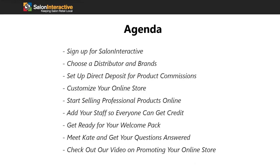Just to quickly review what we'll do in this whole process: ideally you'll get signed up for Salon Interactive, you'll be able to choose your own distributor and brands, you'll be able to set up direct deposit for your product commissions, you can customize your online store, you can start selling professional products online, and you can add your staff so everyone can get credit for products sold.